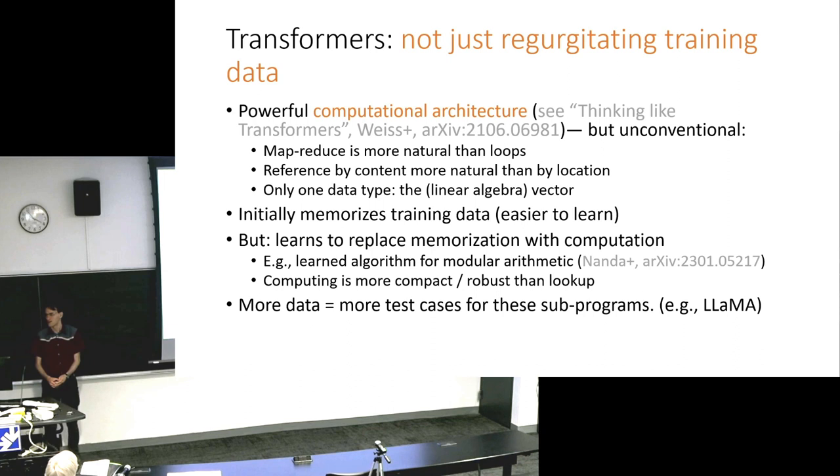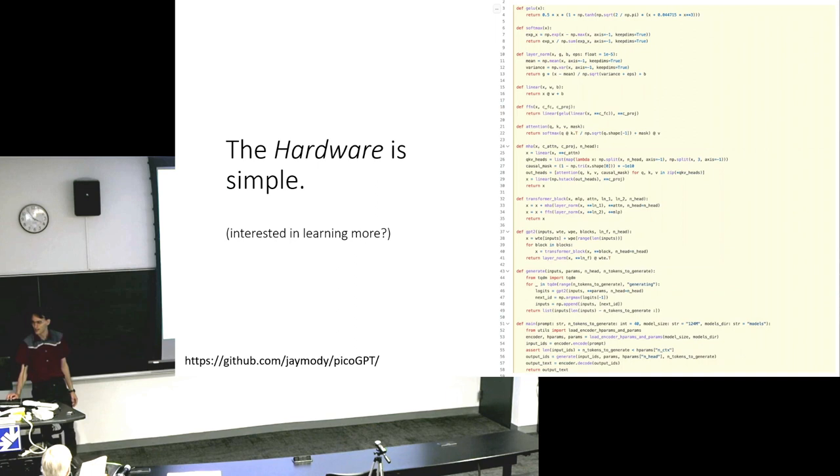So transformers are sometimes, these models underlying these things are sometimes blamed as being just regurgitating things, but actually it's a powerful computational architecture. So it's a really unusual one, and I can talk more about this later if you're into these kind of things. And maybe it does initially start memorizing this training data, but later it actually learns to do the computation that you need to do, because computing is more compact than lookup. So more training data just gives more test cases for these little programs it's learning.